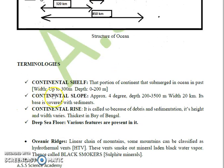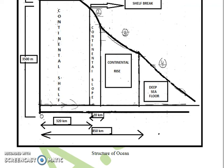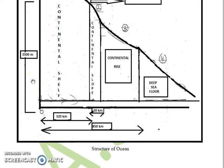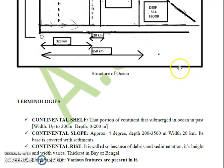Coming to the second part, which is the continental slope. The continental slope is approximately 4 degrees and can vary up to 25 degrees. The depth of the continental slope is 200 to 3500 meters, and its width is 20 kilometers, as shown in the diagram.